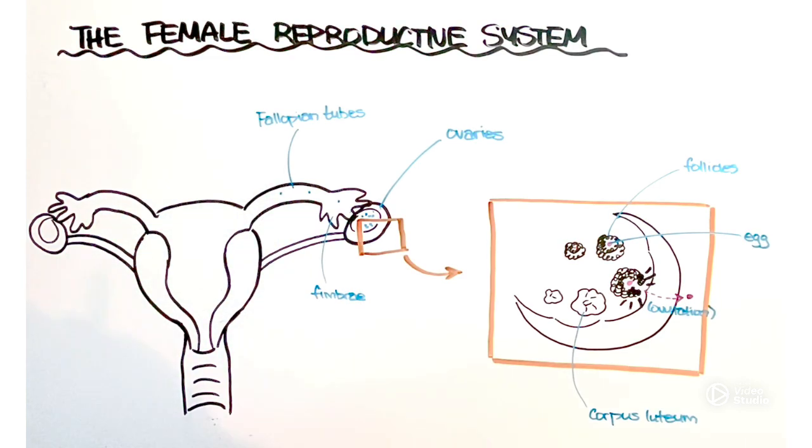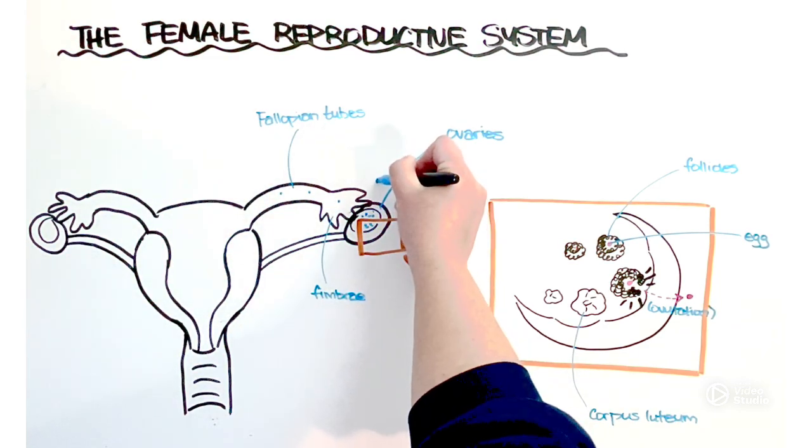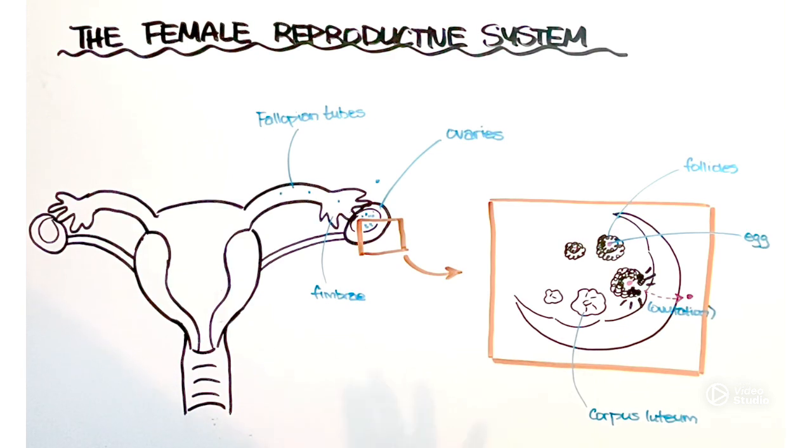Once in a while when an egg is ovulated it ends up outside of the fallopian tube which can be particularly dangerous because if it's fertilized out here it can result in something called an ectopic pregnancy which would put the mother's life at risk unfortunately. So it would not be a viable pregnancy.